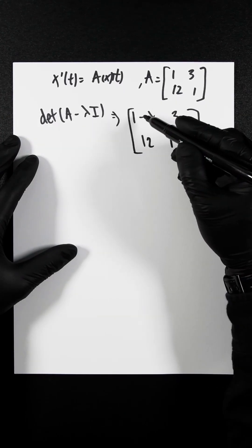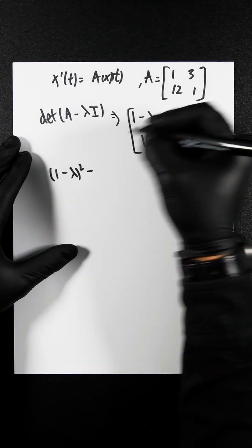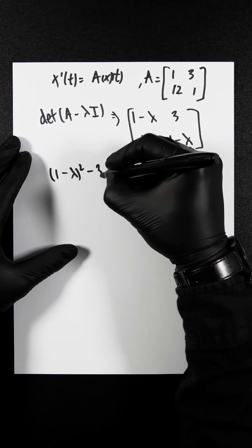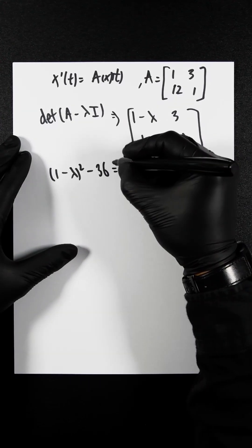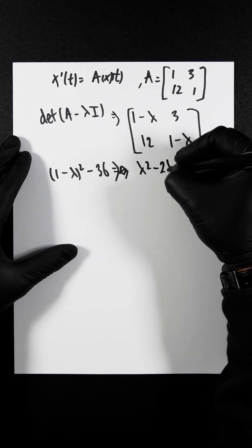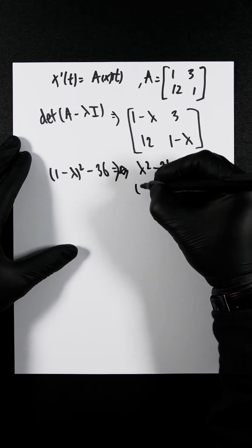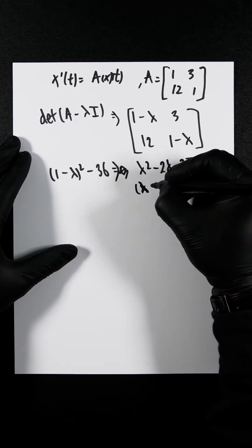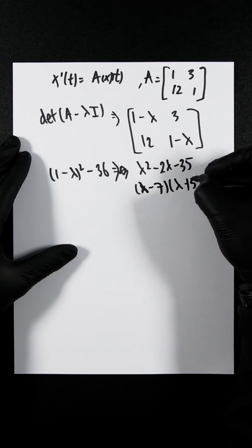Now finding the determinant, it's (1 minus lambda) squared minus 36 equals... oh sorry, I was going straight to solution. It's lambda squared minus 2 lambda minus 35, which factors to (lambda minus 7)(lambda plus 5).